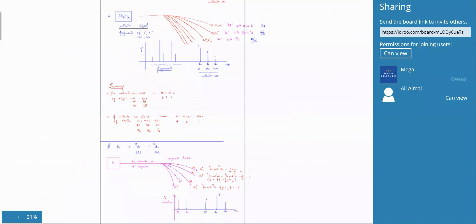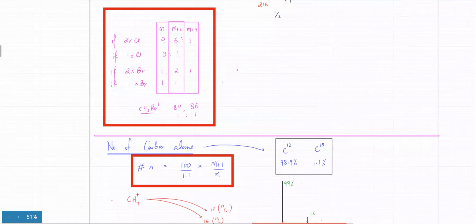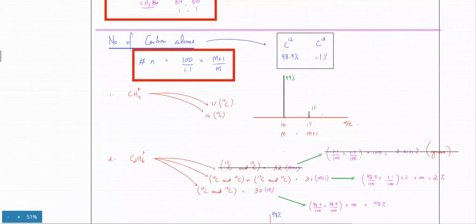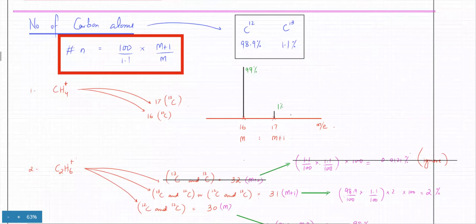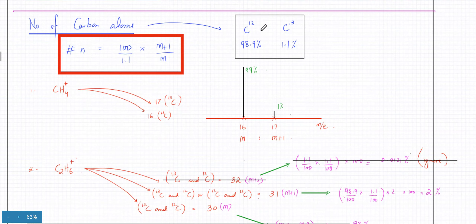From the M and M+1 peaks in mass spectroscopy, you can figure out the number of chlorines, bromines, and also the number of carbon atoms using a formula. Because of the carbon-13 isotope, the mass of the molecule could be one greater — for example, CH4 could have a mass of 16 if carbon is 12, or 17 if carbon is 13. Carbon has two masses, but 99% of the time you get carbon-12, and only 1% carbon-13.